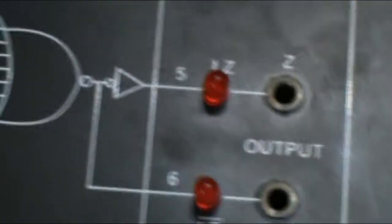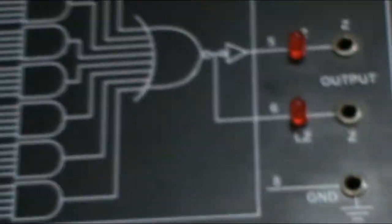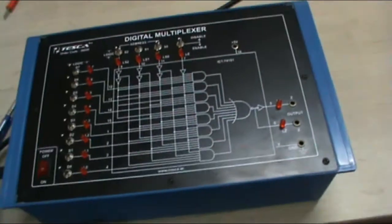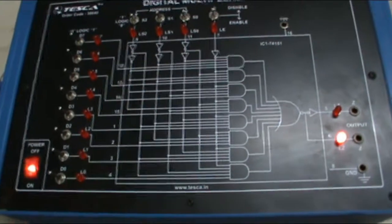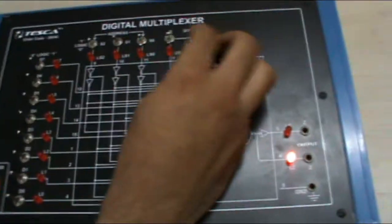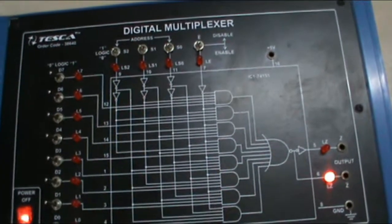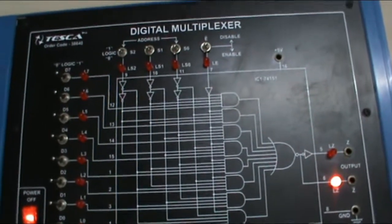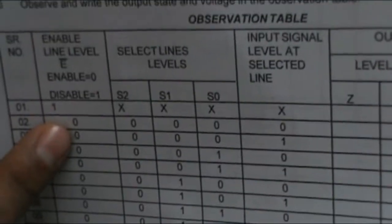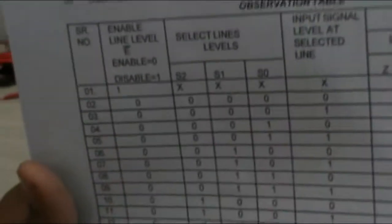Now in order to perform this experiment, first of all we switch on the main supply and keep this switch to enable position. Now we have to take the output according to this table given in our manual. We have to set enable as enable. Enable is 0 and disable is 1, so we have to set it to enable which shows these 0s.